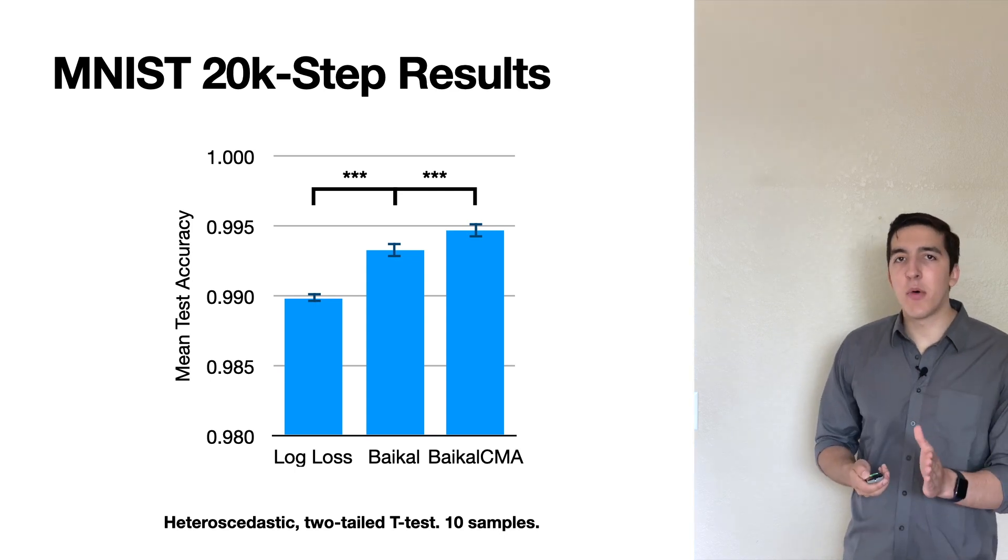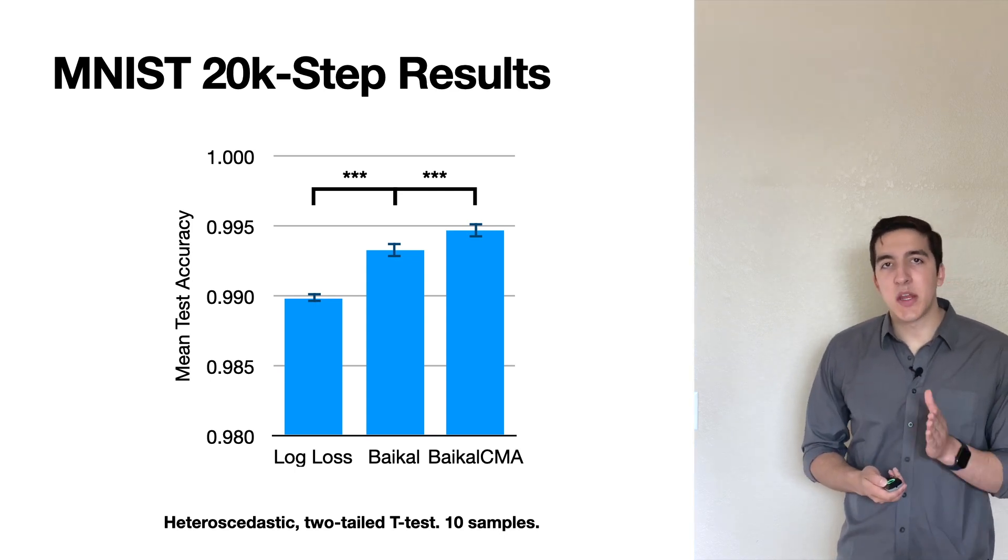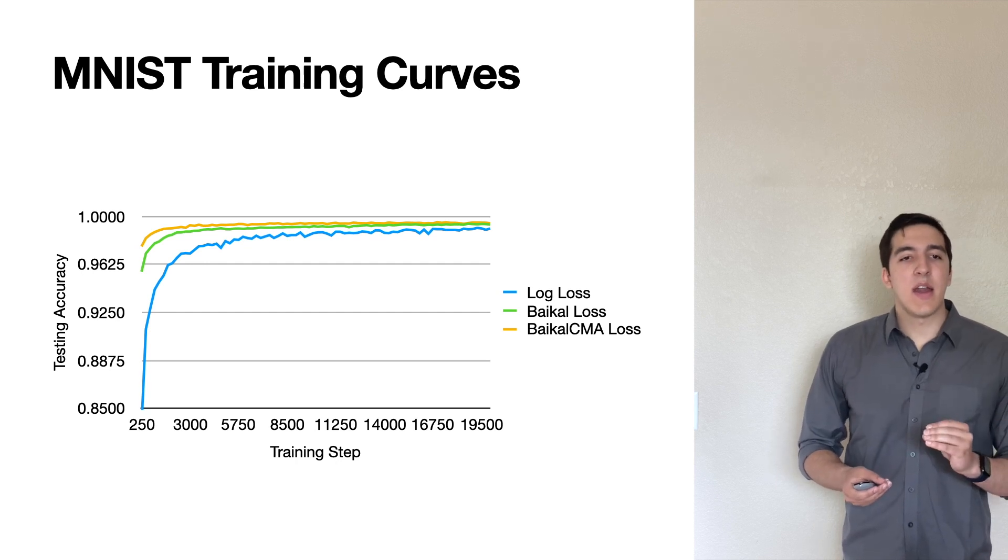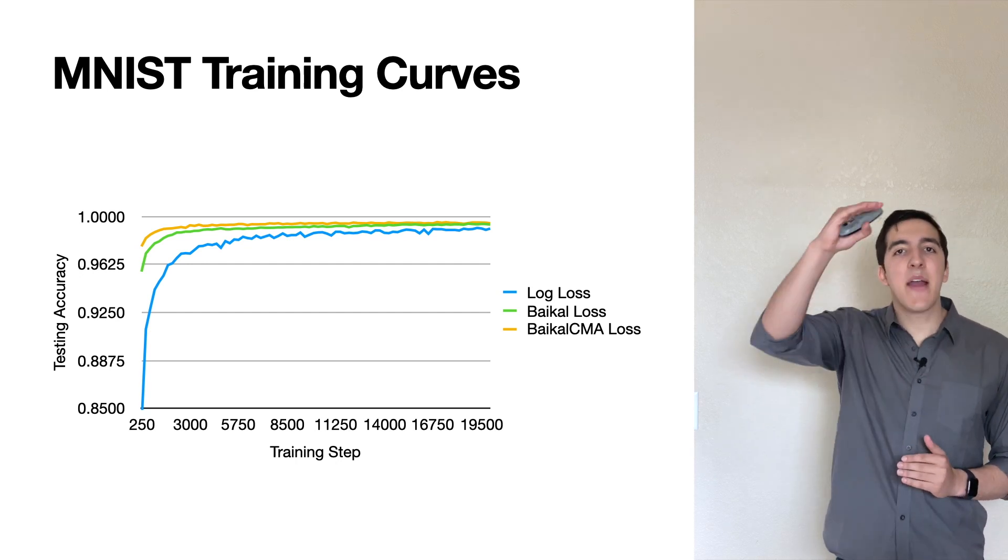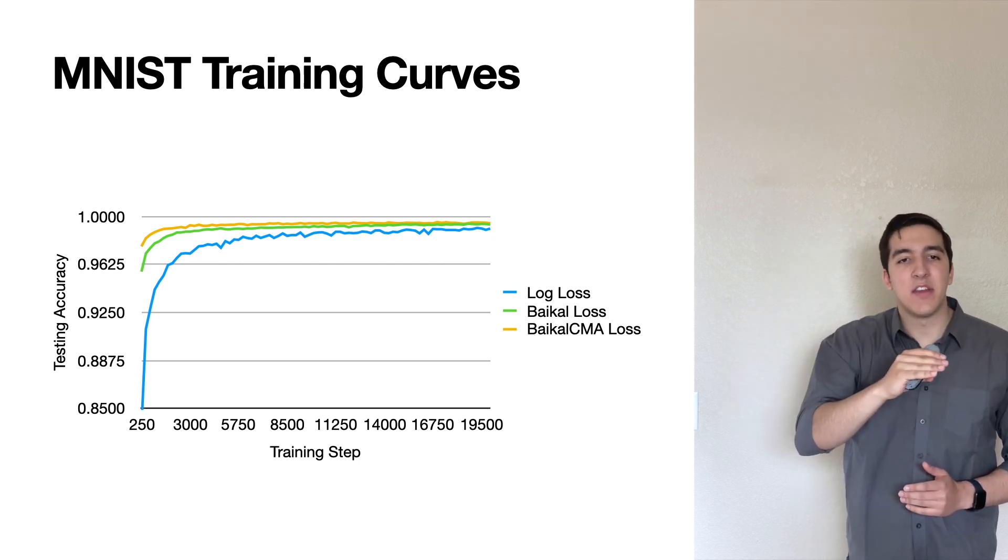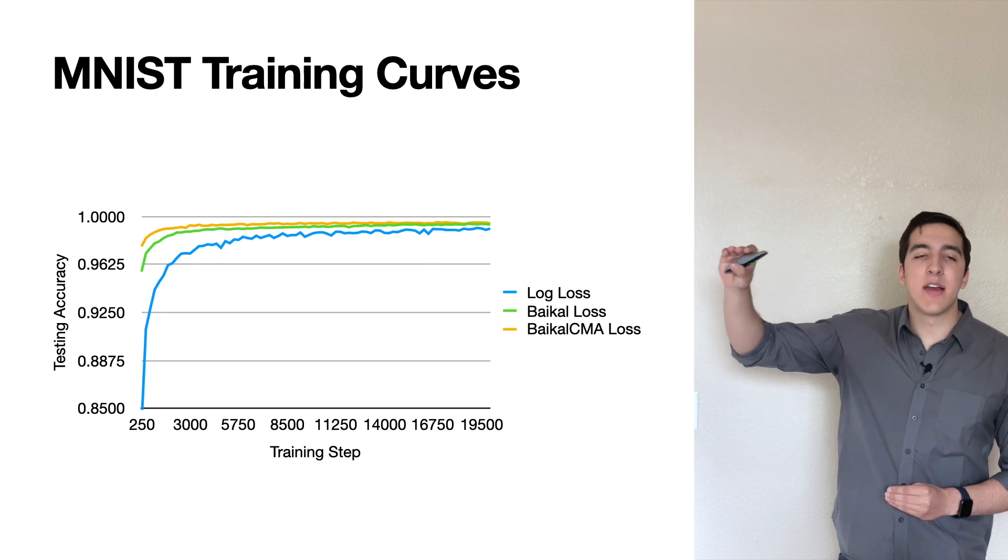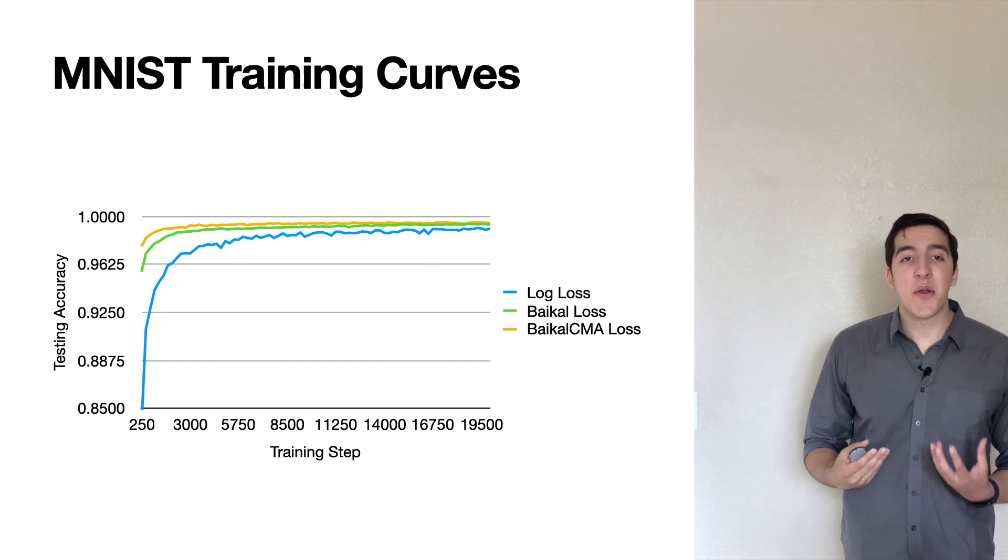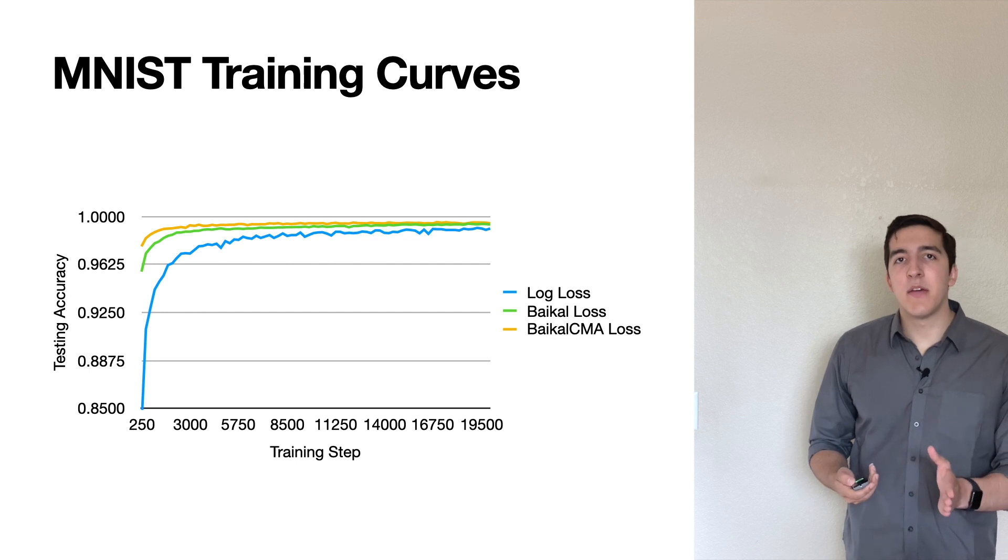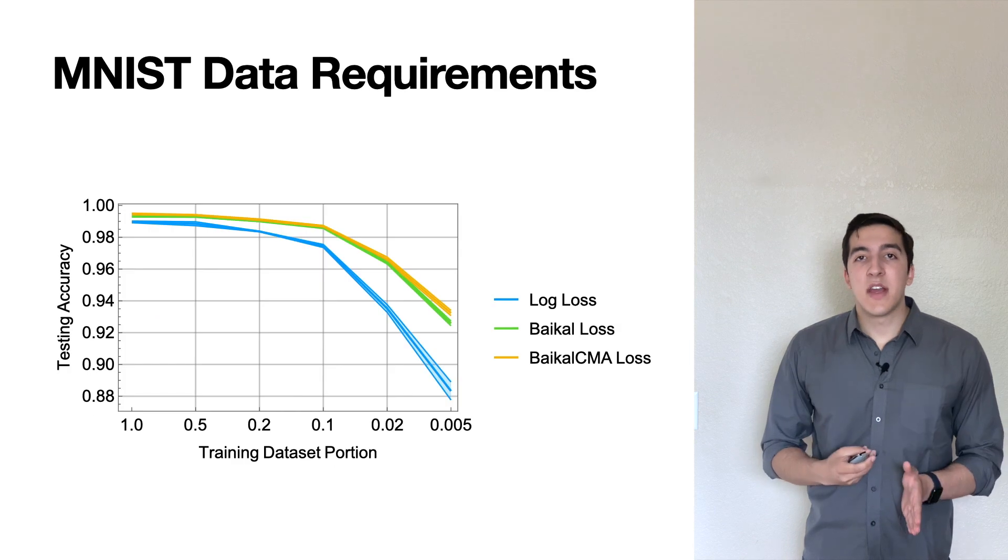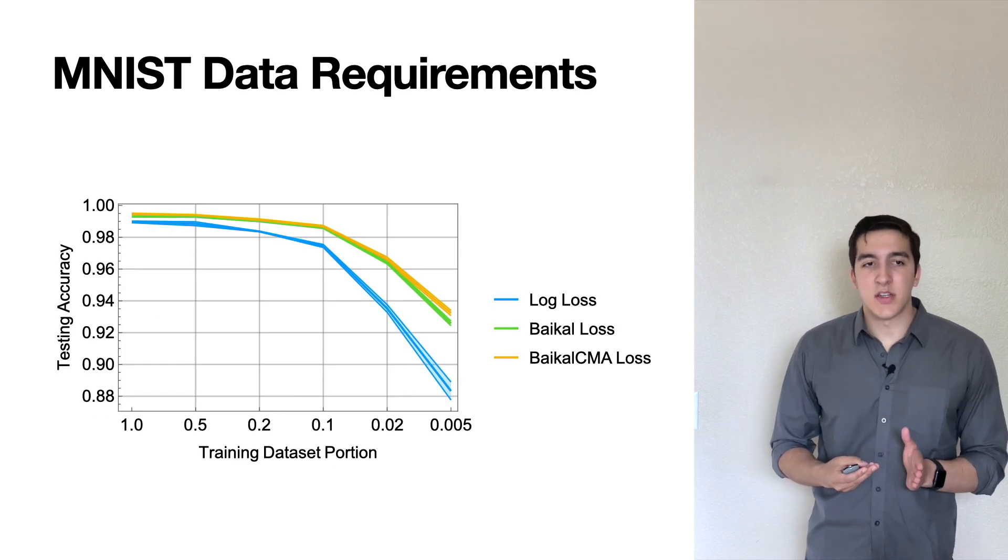And this becomes even a little bit more evident when we look at the training curves. So you can see Baikal and Baikal CMA are able to reach higher levels of accuracy much earlier on than the log loss is able to, and they maintain a higher level of accuracy as the network converges. This is really encouraging, and it shows one of the benefits of training to 10 percent of the full number of epochs. We also have better data utilization with these loss functions.